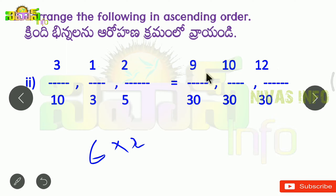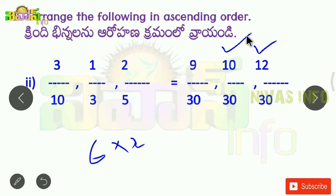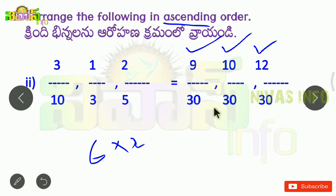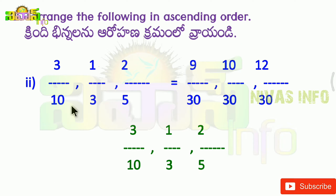So now we see which is big or small, because we have equal denominators. So big or small is 12. We call this ascending order. This is the first order, this is the second order, this is the third order. So ascending order — there is no change in ascending order.